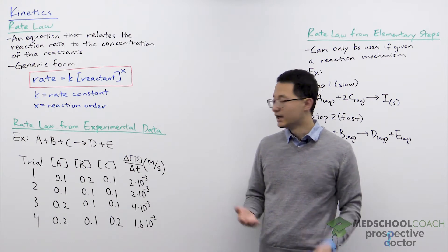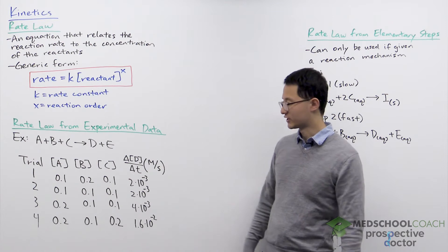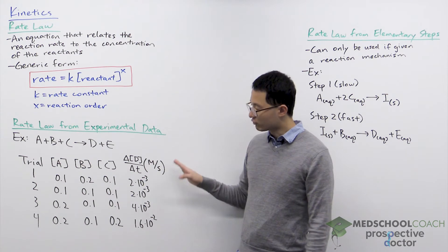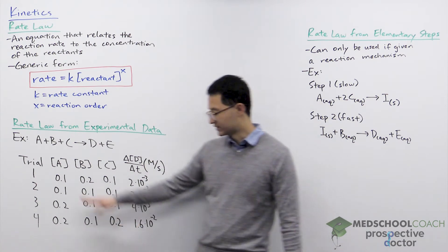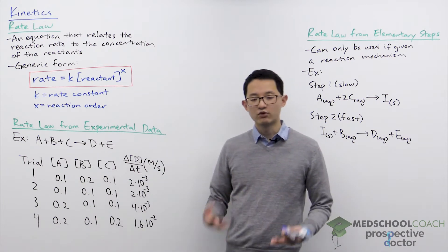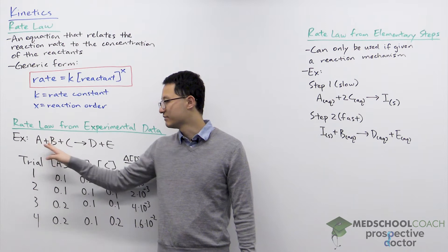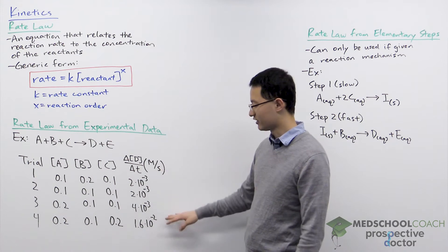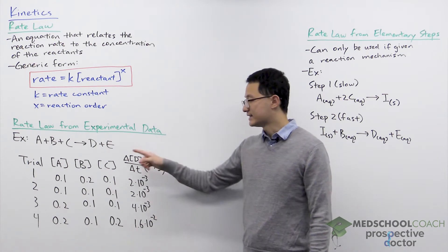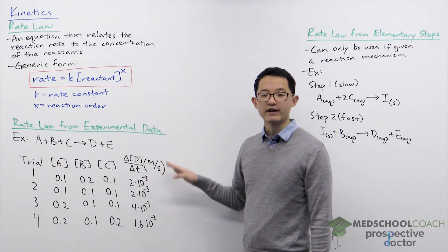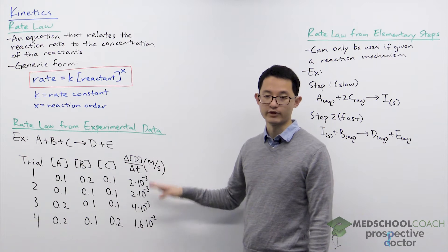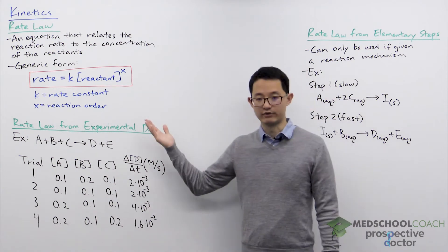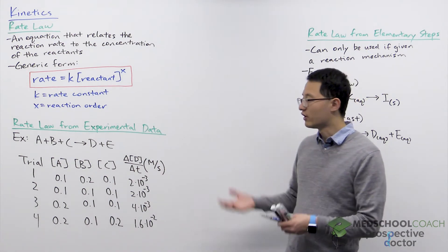The situation is usually they'll give you some sort of reaction — here we're going with a pretty generic reaction: A plus B plus C gives us D plus E. They will run the reaction through several trials. We have four trials where they vary the concentrations of reactants A, B, and C while measuring the reaction rate — specifically the change in concentration of D over time, which measures the rate of product production.